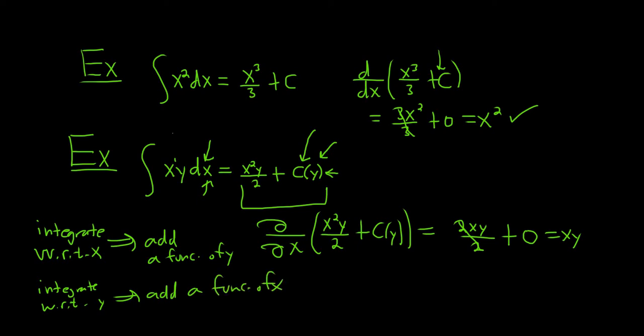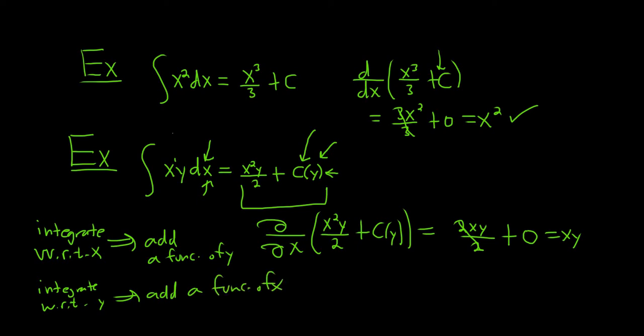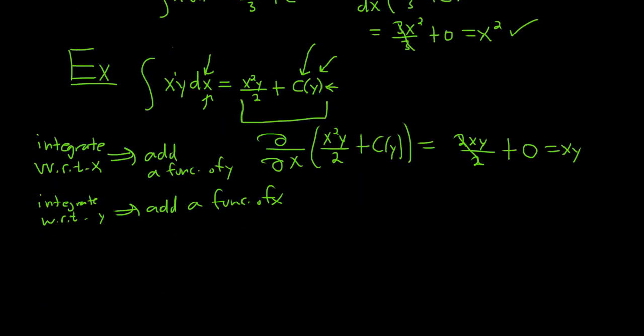Let's do one more example just to make sure you got it. So if you integrate with respect to x, you add an unknown function of y. Let's go ahead and integrate with respect to y. So this time, the x is constant, so we get x, then we integrate the y, so we add a 1, because there's a 1 here, and then we divide by 2. So we integrated with respect to y, so we have to add an unknown function of x, which I'll call c.